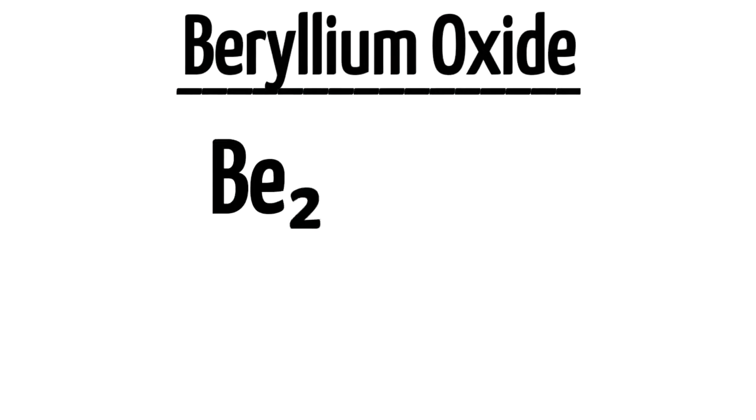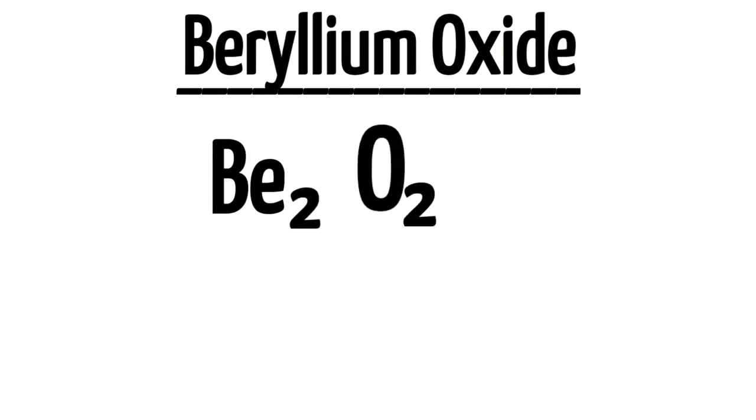Then for oxide, it is oxygen, so O2. Even if we interchange the numbers, the 2 and 2 will get replaced again. So what will we do? We will simplify that and write BeO.